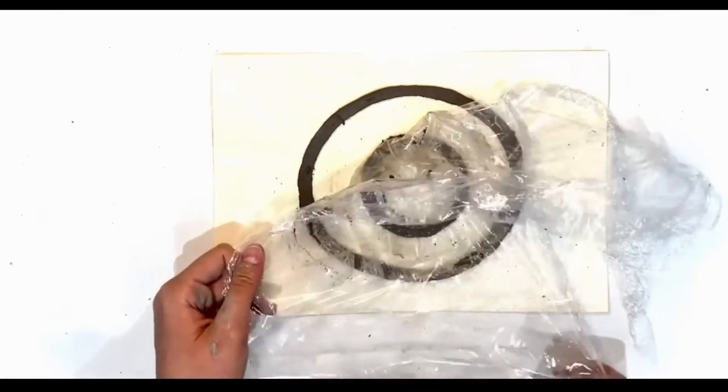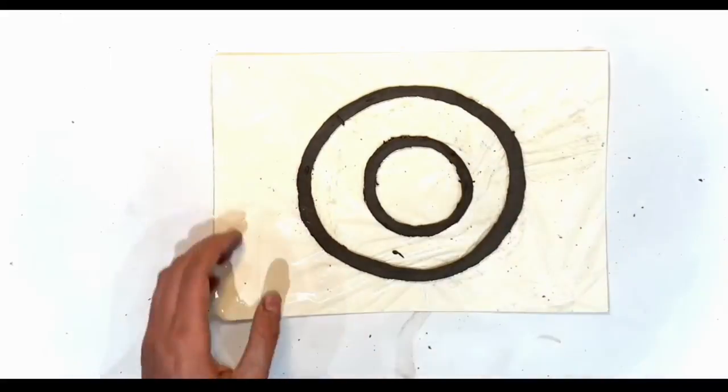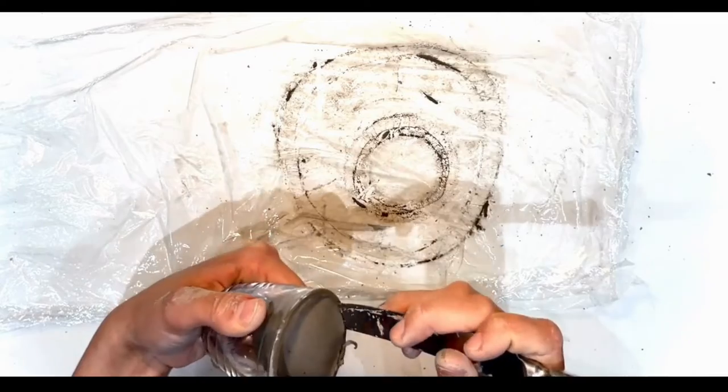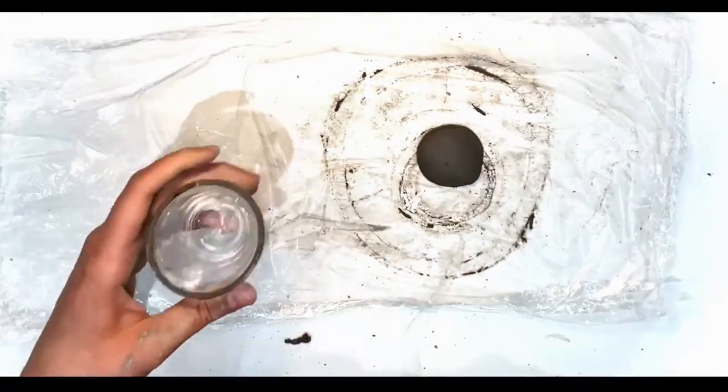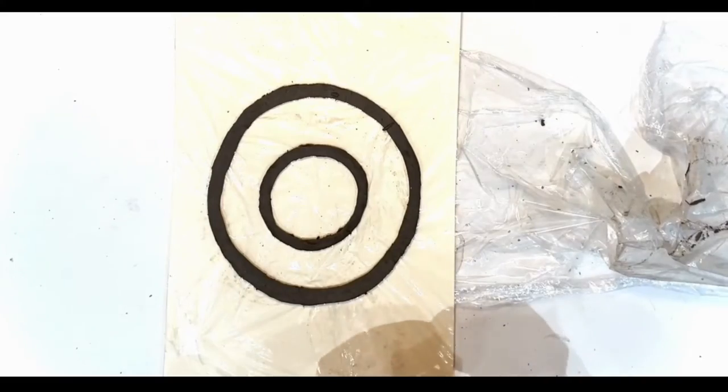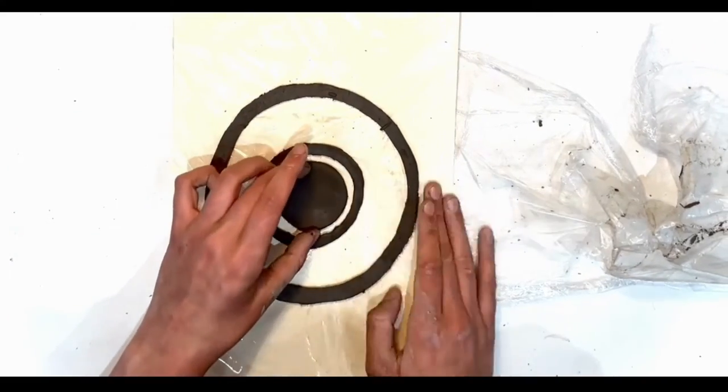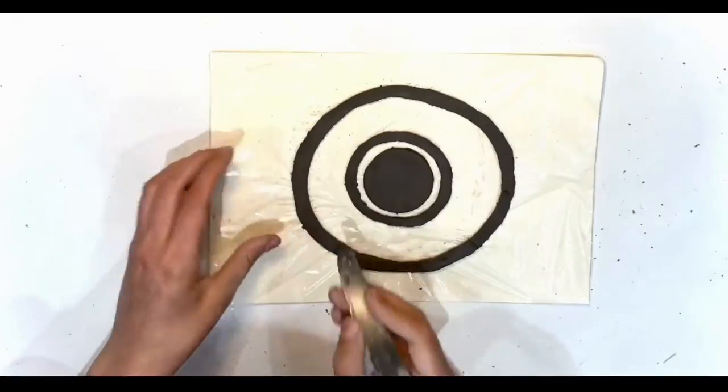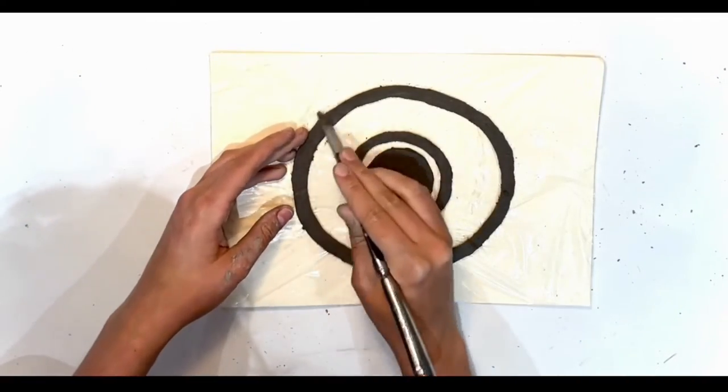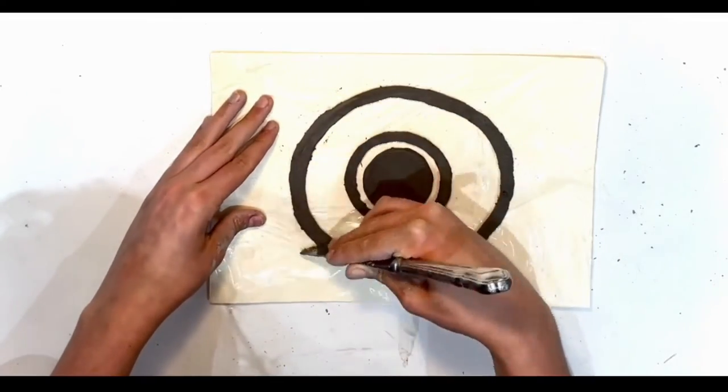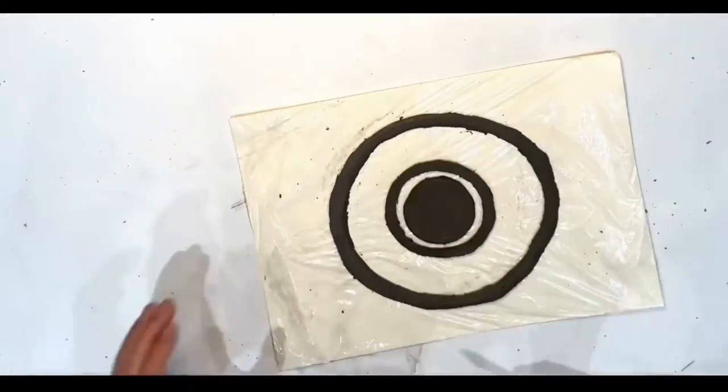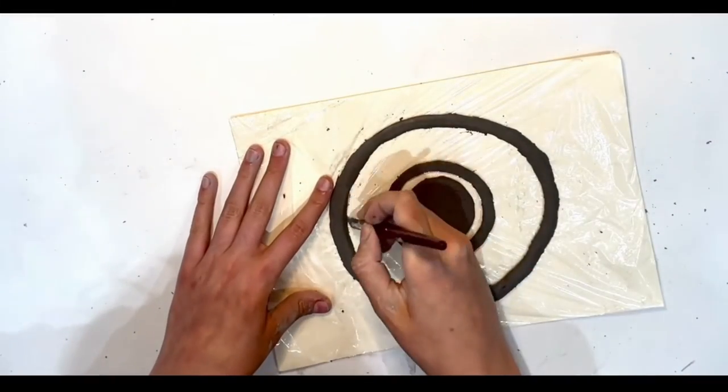Once you've done that, place it in the center of the other clay circle on the card. Remove the clay from the smallest cup and add it inside the circle you just made. Keep neatening the edges and start to round the surface of the rings. You can do this by dragging a blunt knife along the edge at an angle and smoothing it out with your finger.